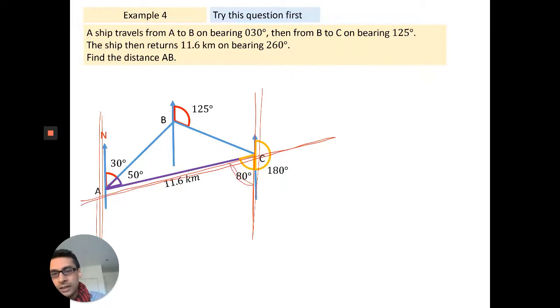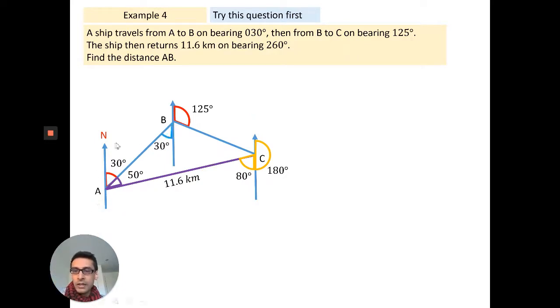And then angles inside a triangle. So I end up again using the sine rule: A over sine 45 equals 11.6 over sine 85. The 85 is 30 and 55 given there. Rearrange it, and I get 8.2 kilometers.